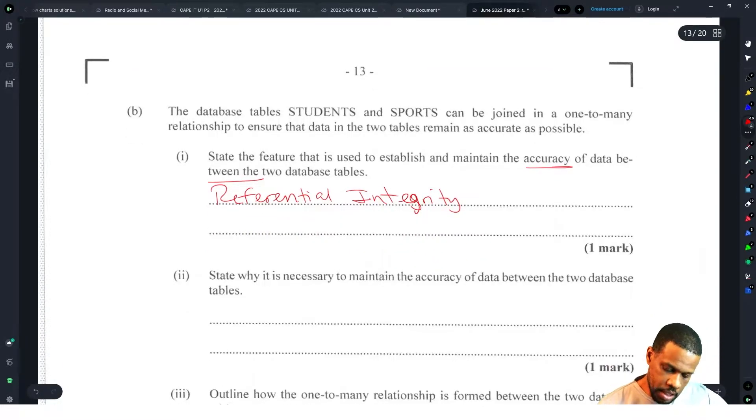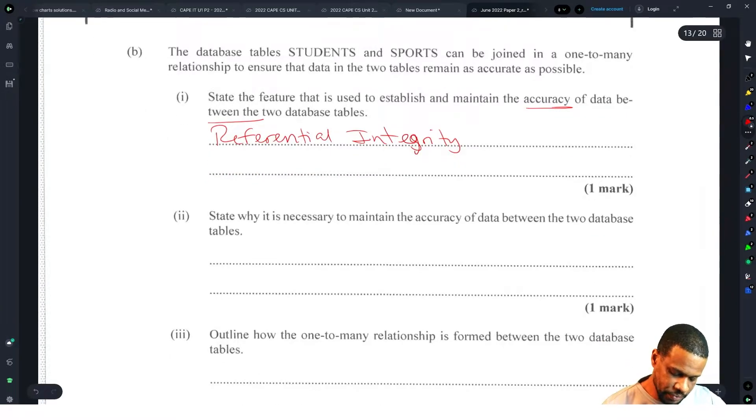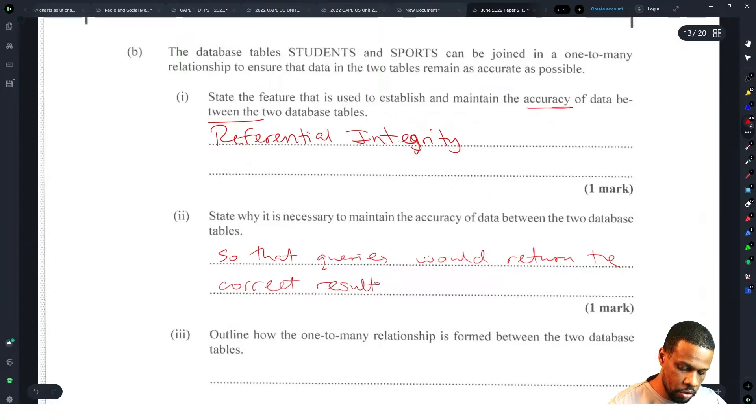State why it is necessary to maintain the accuracy of data between the two database tables. So that queries would return the correct results all the time.